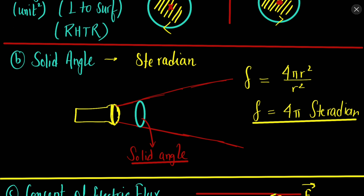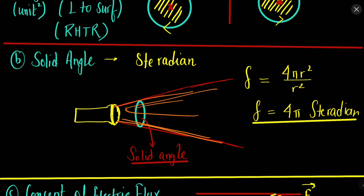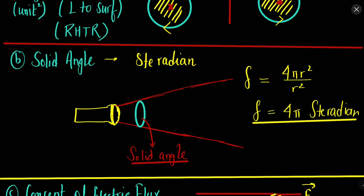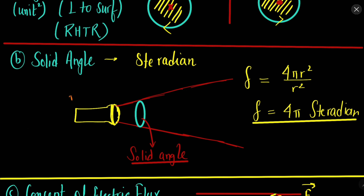The second important concept is that of solid angle. If we have two lines, the angle between them is a normal 2D angle, but in 3D we use the solid angle. The torch example is the best way to understand it — the light of a torch goes out in all directions, and that region defines the solid angle. The unit of solid angle is steradian, and just like one complete angle is 2π radian, one complete solid angle is 4π steradian.